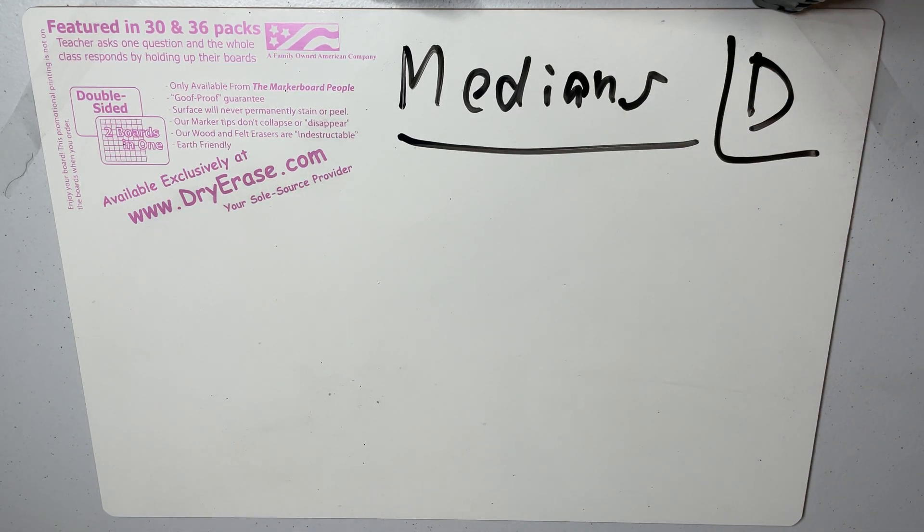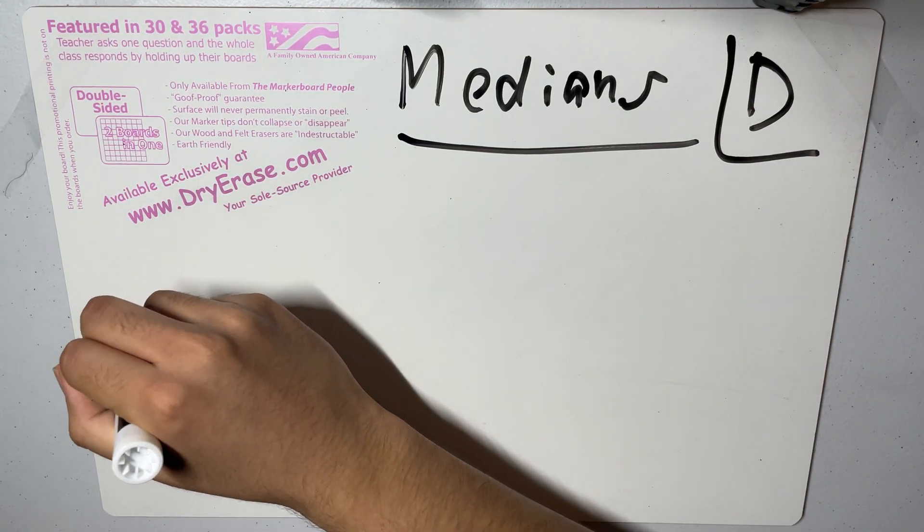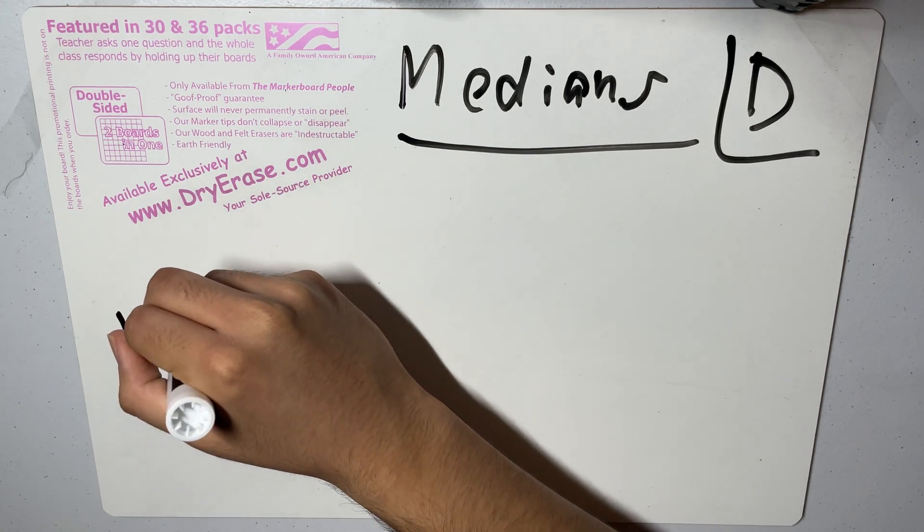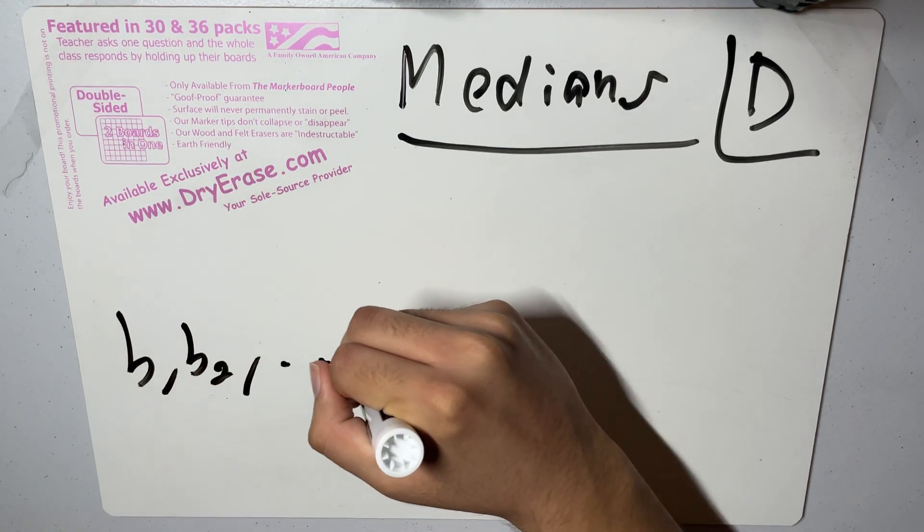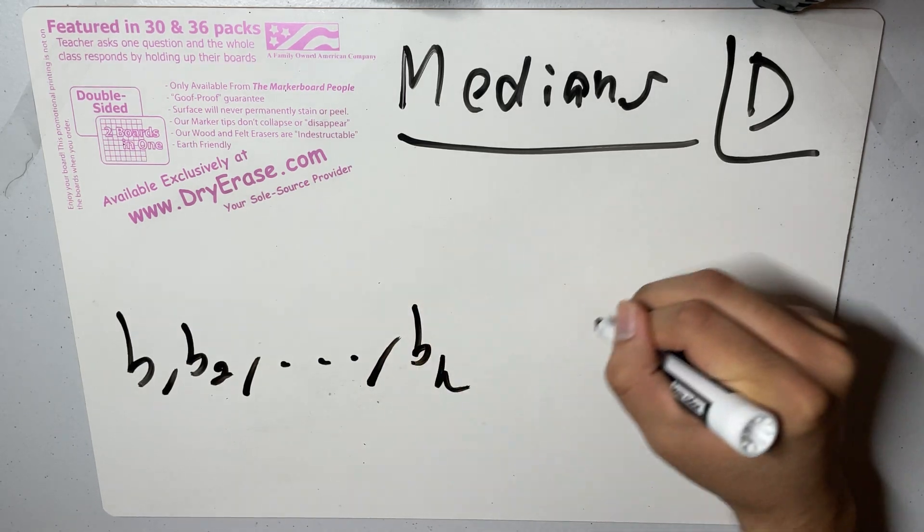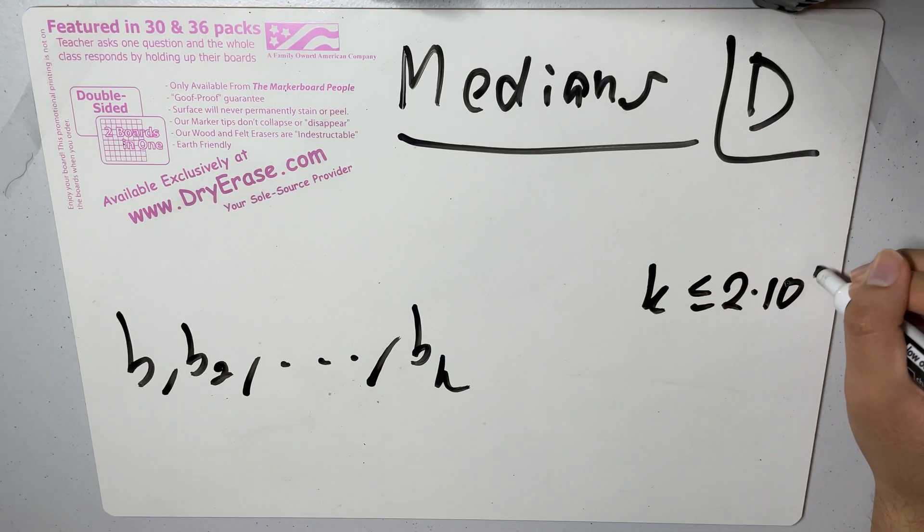Basically, the problem is you're given an array b1, b2, through bk, where k is less than 2 to the 5.